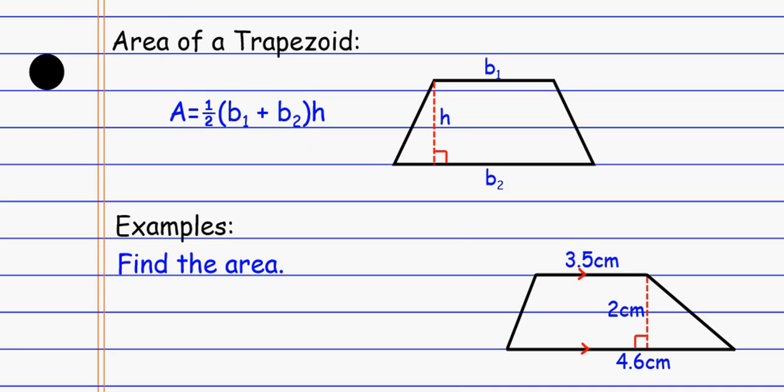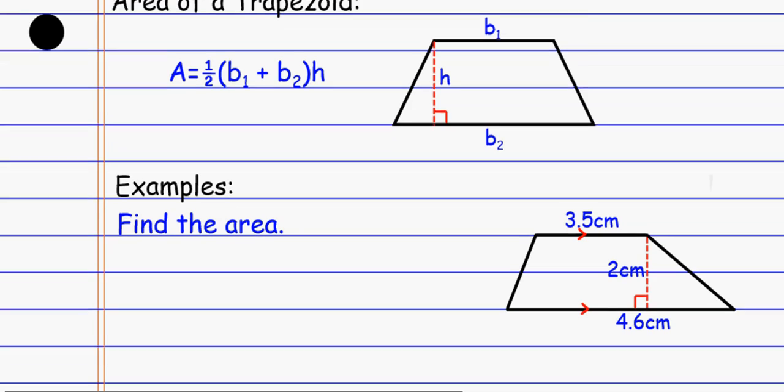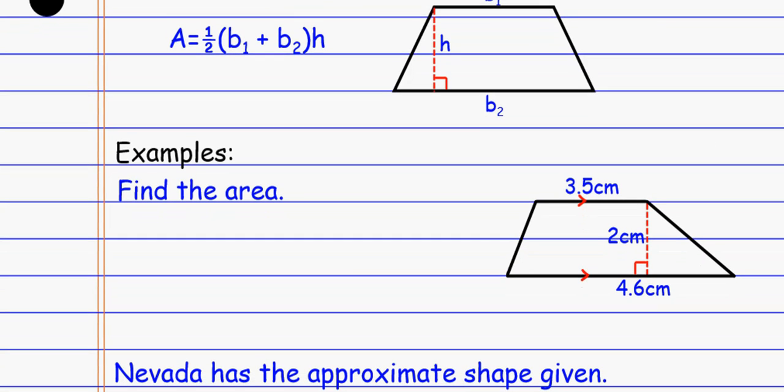You can do the actual formula that's written here. I would just think of it as average of the bases times the height. When I look at this guy, if you just plug it into the formula, area equals one-half. Remember, the bases for a trapezoid are the parallel sides. That's the 3.5 plus the 4.6, and then times the height is the two.